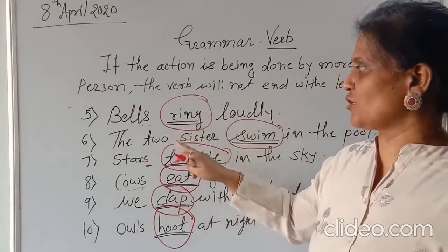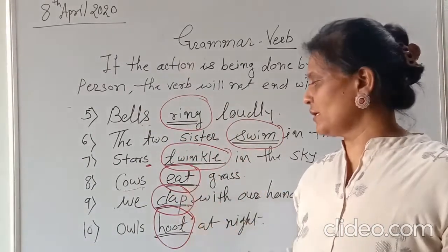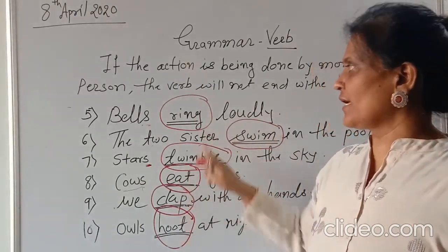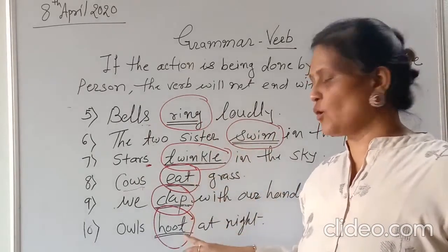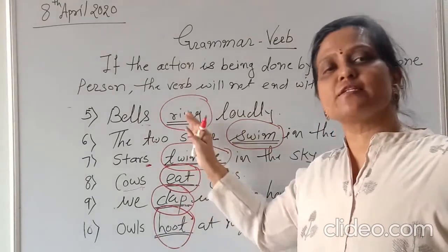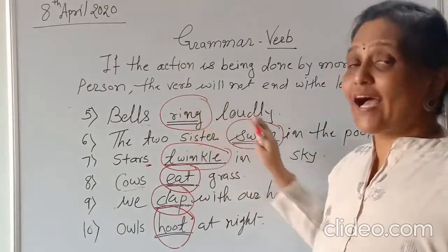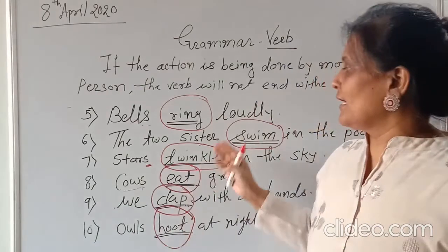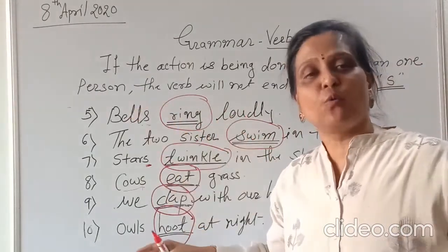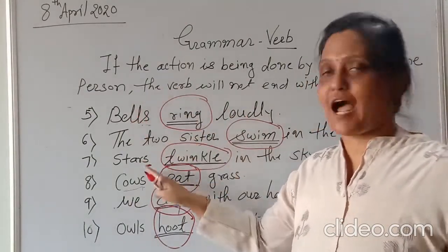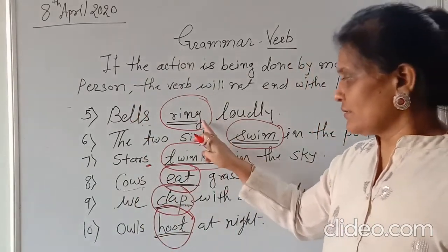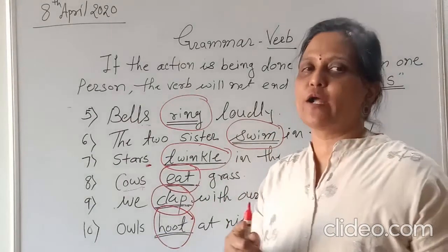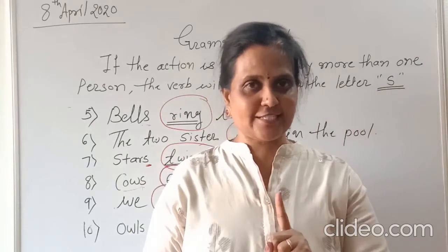You can observe here the action words in these sentences: ring, swim, twinkle, eat, clap, and hoot. In these action words — these verbs — we cannot use 's'. We do not use 'rings', 'swims', 'twinkles', 'eats', 'claps', 'hoots' — no. We cannot use 's' with these action words because before each of them there are more than one person, more than one animal, or more than one thing — bells, two sisters, stars, cows, we, and owls. That is why we cannot use 's' with the action word. Hope you understand where we use 's' and where we cannot use 's' for the verb, for the action word.